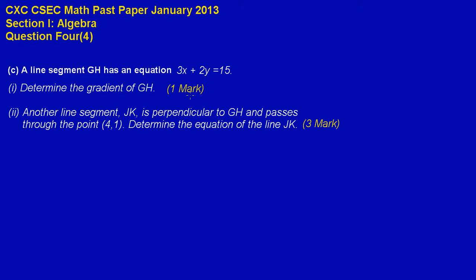And that's an easy one mark. Now here they gave us a general equation. Based on what you would have learned from previous lessons, the equation of a straight line is y is equal to mx plus c, where m is the gradient and c is the y-intercept.